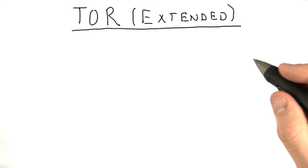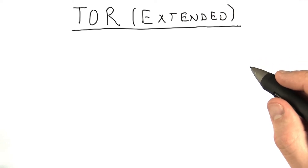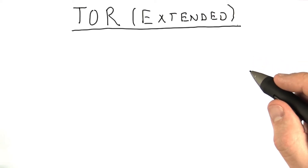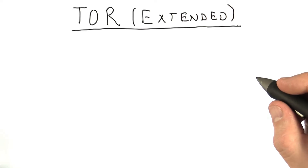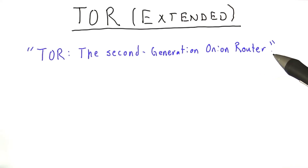The discussion of onion routing in lecture left out many important aspects needed for a practical and secure onion routing network. The following questions are based on this paper on Tor. A link to the paper will be included in the instructor's comments.